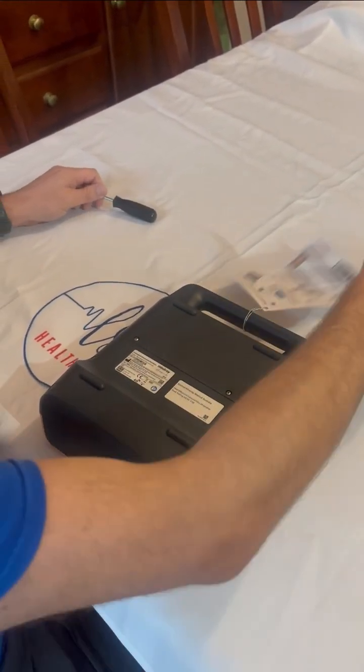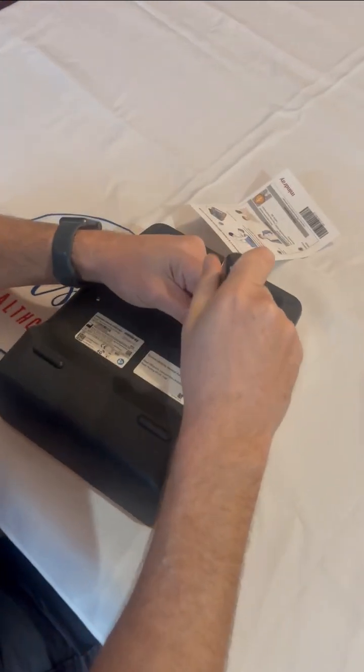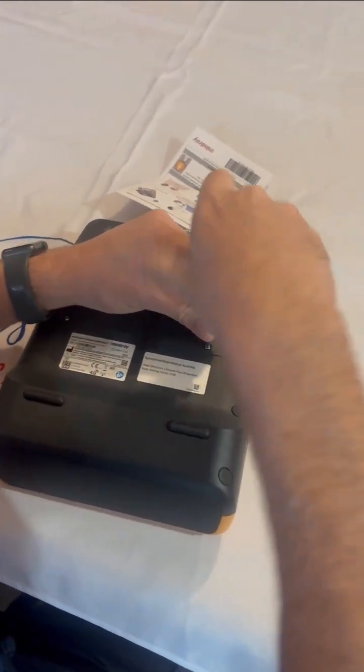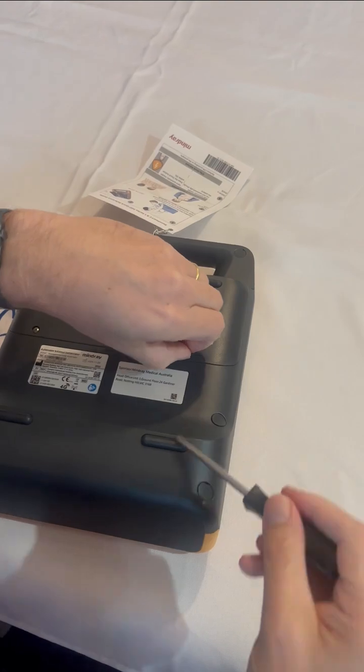Locate the battery compartment at the back of the AED. Using a star screwdriver, carefully remove the two screws securing the battery cover.